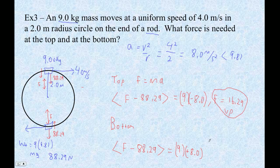So this is going to be 9 times 8 plus 88.29. And that's 160.29. So it's positive 160.29.